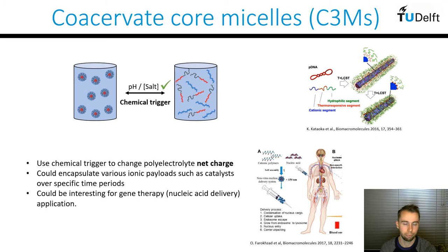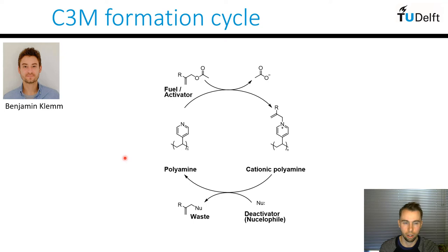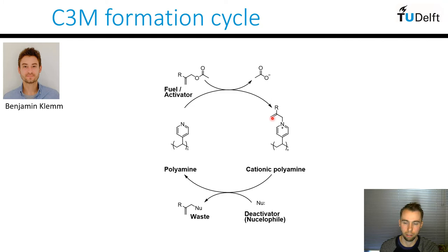The way we're going to achieve this is through a chemical cycle developed by PhD student Benjamin Glenn. We have a fuel or activator species which is a Michael acceptor or electrophilic type species that can react with a range of nucleophiles including tertiary amines. The interesting thing is it forms a cationic quaternary species, which can then further react with another nucleophile in solution, regenerating back the starting polyamine and creating a waste product. Once back to the starting polyamine, you can repeat this cycle again as many times as you like, continuously transitioning between neutral and cationic amine states.